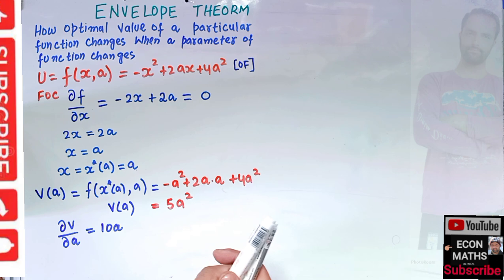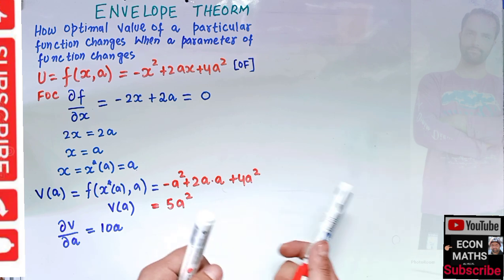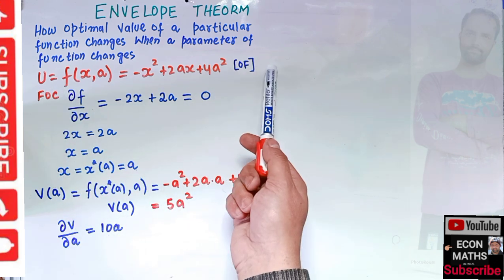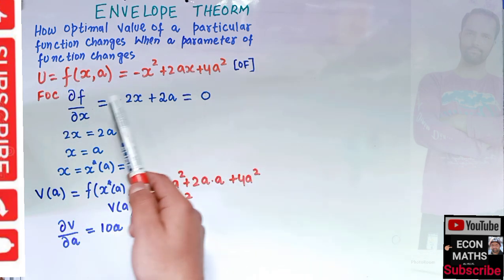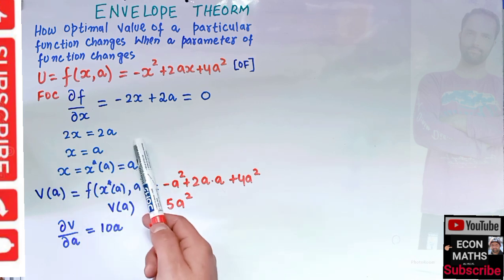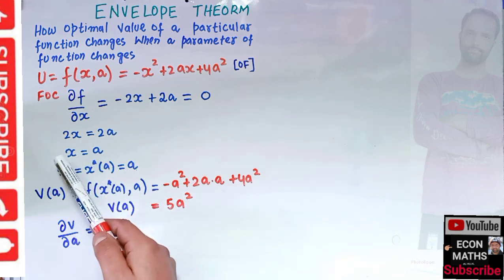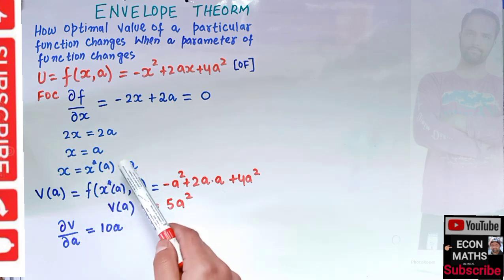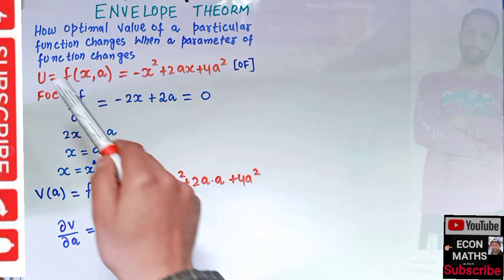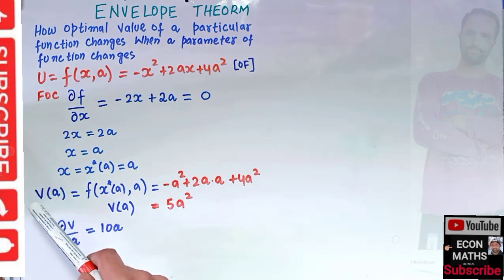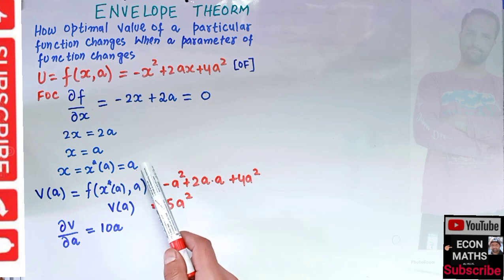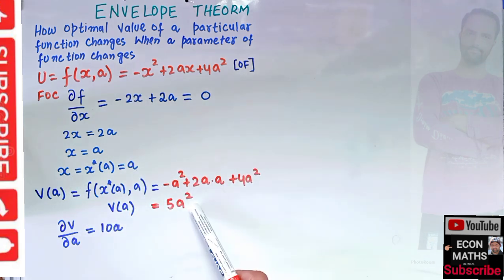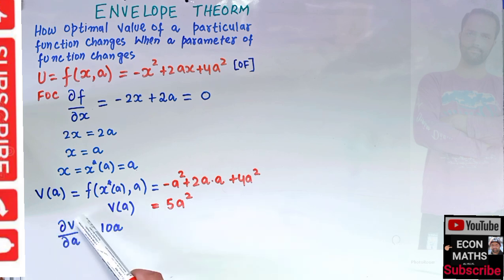To recap: we had an objective function in one variable and a parameter a. The first order condition gave us x equals a as the critical point. Plugging that back into the objective function gave us V(a) equals 5a squared, and differentiating with respect to a gave us 10a.